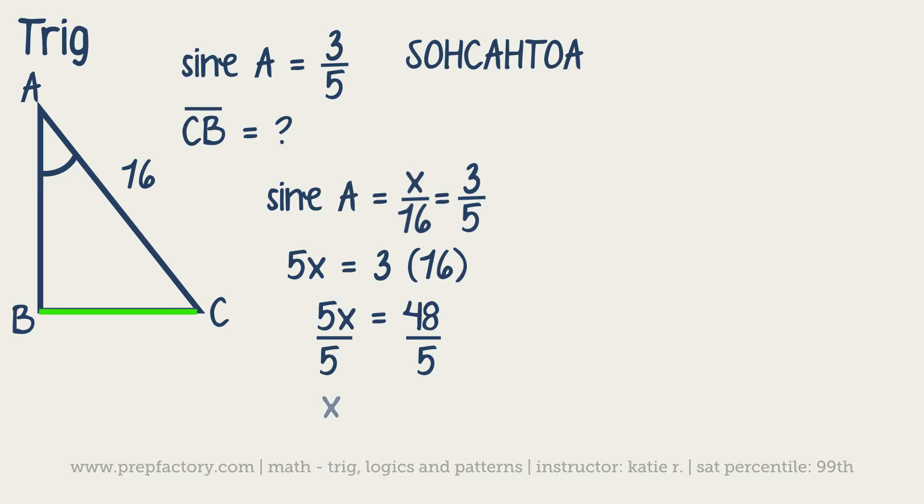When you divide 48 by 5, you're going to end up getting 9.6. So that would be our answer. Notice, totally normal ACT problem doesn't give you a whole number answer. That'll happen sometimes.